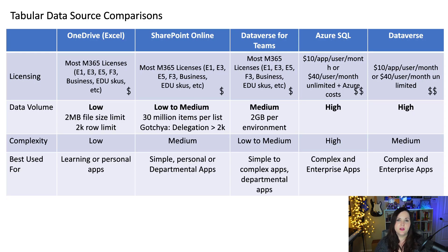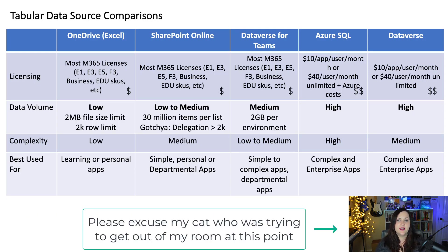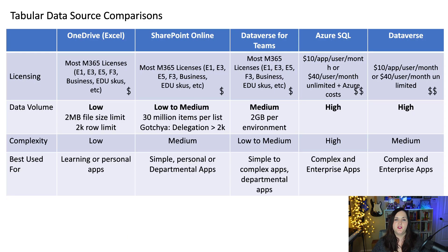When a function isn't delegable, all of your data from the list won't be returned in the Power App. A common example — going back to the timesheet analogy — if I wanted to return all timesheet records for the current day and my SharePoint list exceeded 2,000 items, using an 'IsToday' filter to return that information would not be delegable. What it would do is only search the first 2,000 records and return data based off of that, ignoring the rest. That's why the data volume is really low to medium depending on what you're trying to do.